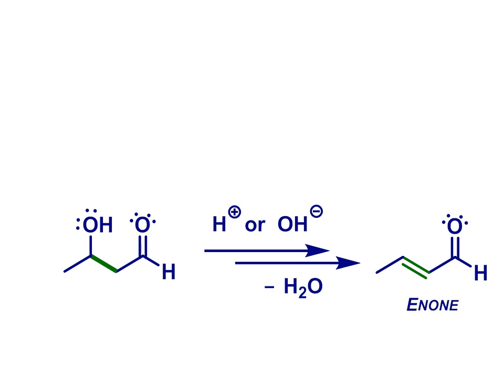An E1CB reaction whereby an alpha proton is lost first and then hydroxide expelled as a leaving group. The loss of water in this second step means that the aldol reaction is sometimes referred to as a condensation reaction or the aldol condensation.